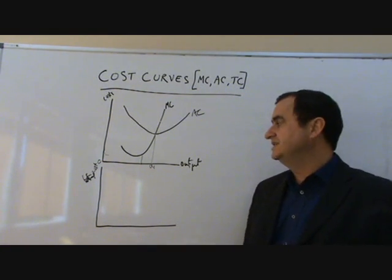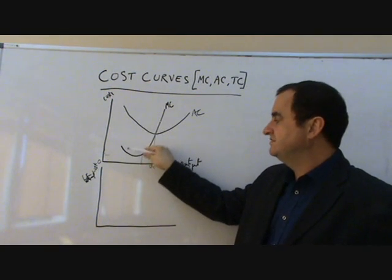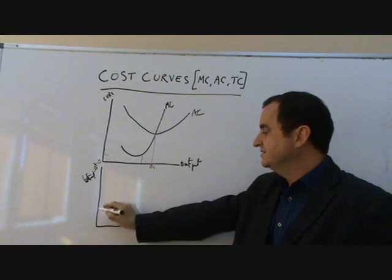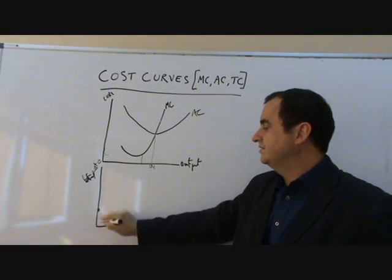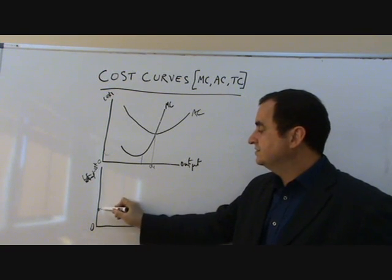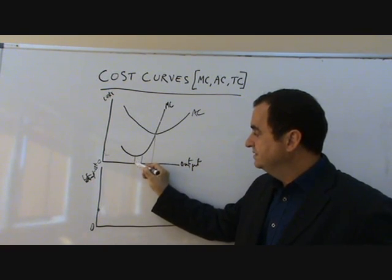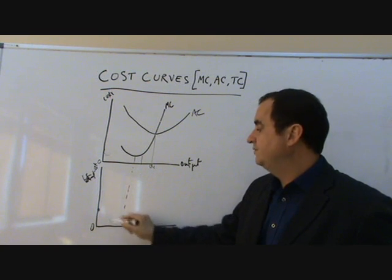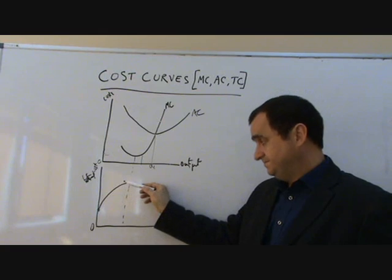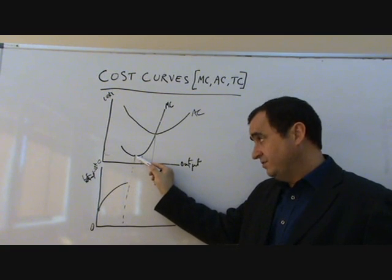Total cost has to be rising because there is always a positive extra cost when making a unit. The MC is always above zero, so total cost is rising. Total cost is going to start not at zero because there is some fixed cost even when output is zero. So total cost is rising.